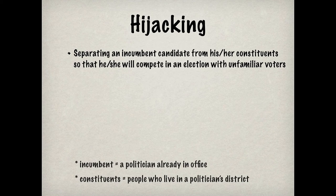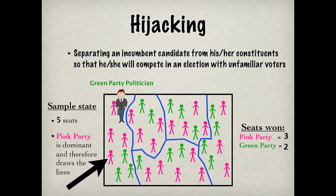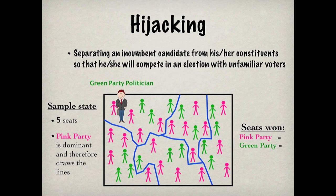Hijacking means separating an incumbent candidate from his or her constituents so that he or she will compete in an election with unfamiliar voters. Let's say there is a really popular Green Party politician who the Pink Party can't beat because everyone in the district knows and likes him — even exaggerating to say the Green Party politician wins his district even though it has a majority of Pink Party members. In order to beat the Green Party incumbent, the Pink Party draws a new district, like this, to force him to try to win votes from a new group of people who may not be familiar with him and his accomplishments. This causes him to lose the election in the new district. Therefore, the Pink Party wins all five seats.